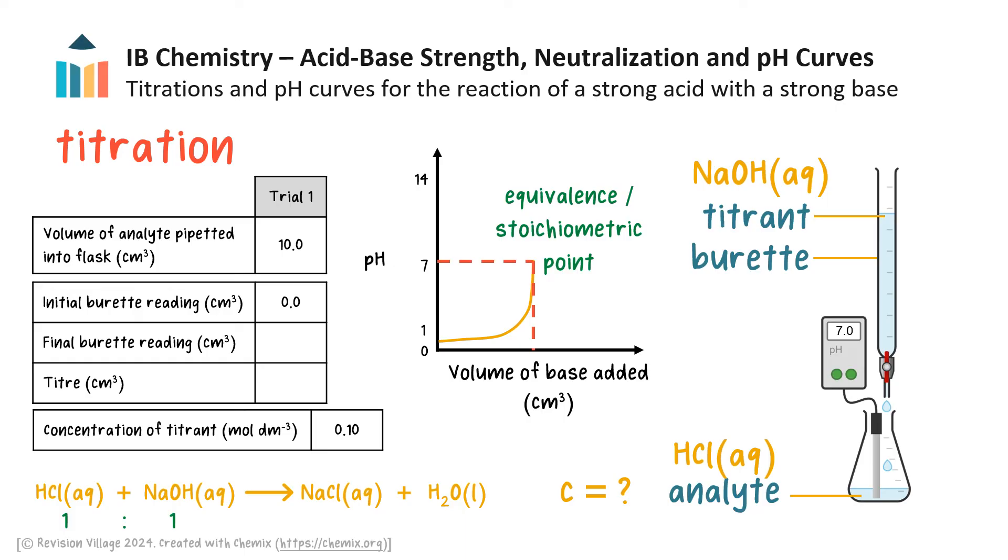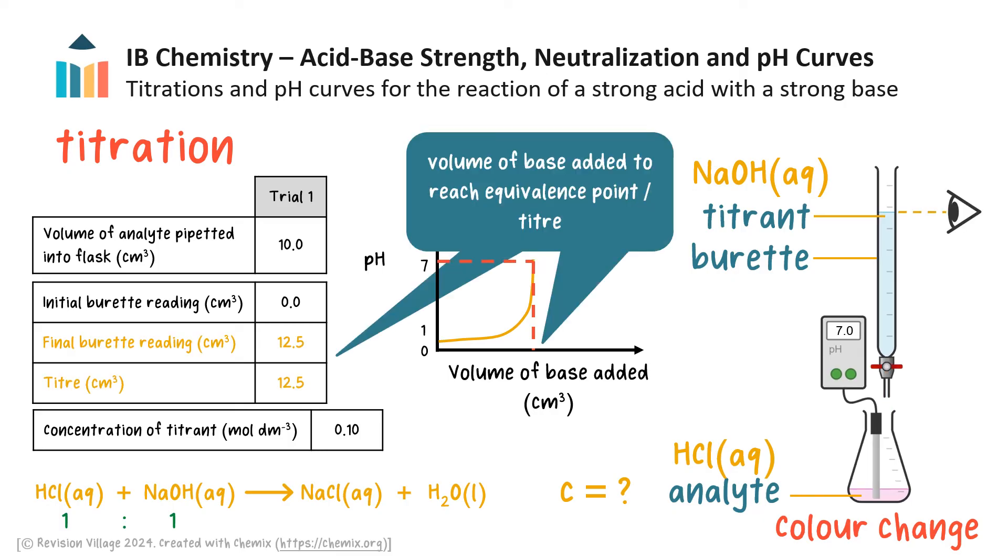Equivalence point or stoichiometric point occurs when just the right amount of titrant has been added to exactly neutralize the analyte. In other words, equivalence point occurs when neither the acid nor the base in the flask is in excess, but only salt and water exist. For hydrochloric acid and sodium hydroxide, this occurs when the moles of acid to base in the flask is 1 to 1, according to the mole ratio from the balanced equation. When just 1 or 2 drops of titrant have been added after equivalence point has been reached, the indicator changes color, and this is called end point. But for practical purposes, end point is often referred to as equivalence point. At this stage, the burette tap is closed, and the final meniscus reading is recorded, and the volume of titrant added to achieve complete neutralization, called the titer, can be determined.